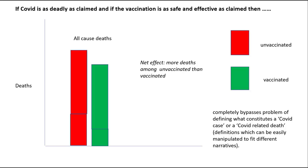These definitions are easily manipulated to fit different narratives. If the vaccine is effectively mandated for all age groups, then we expect, in each age group, the all-cause deaths in the vaccinated to be lower than the unvaccinated.